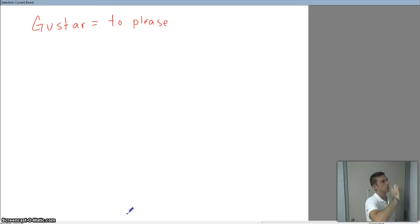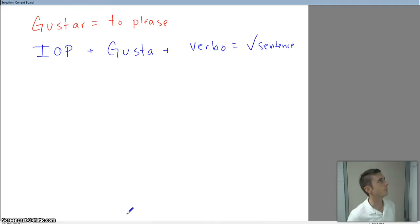Our formula is: IOP, which stands for indirect object pronoun, plus gusta plus verbal—the verb—gives us a correct sentence. IOP plus gusta plus verbal gives us the sentence. This one's done for you—that's what we're going to use in chapter two. If you see yourself using anything other than gusta right here, you need to make a correction.